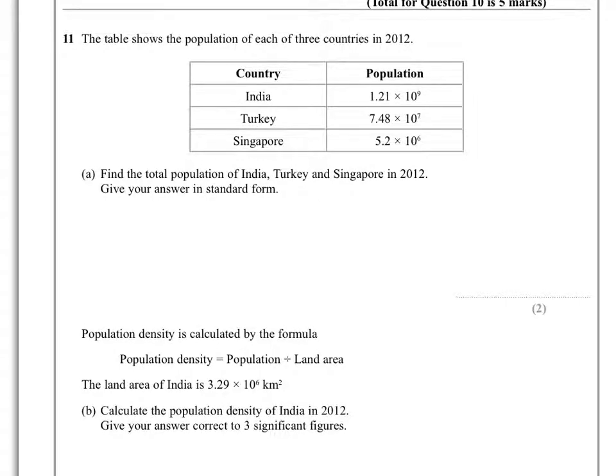In question 11 we're given a table which shows the populations of three countries in standard form. In part A we're asked to find the total population of India, Turkey and Singapore and give our answer again in standard form.